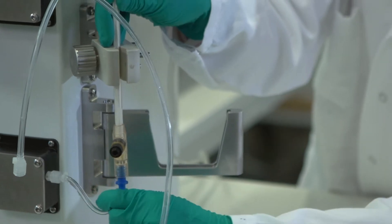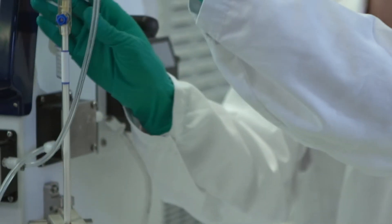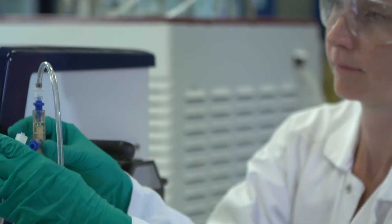Attach the hollow fiber filter to the system. Connect tubing to the system and to the filter. Wet the filter by pumping fluid through the filter.